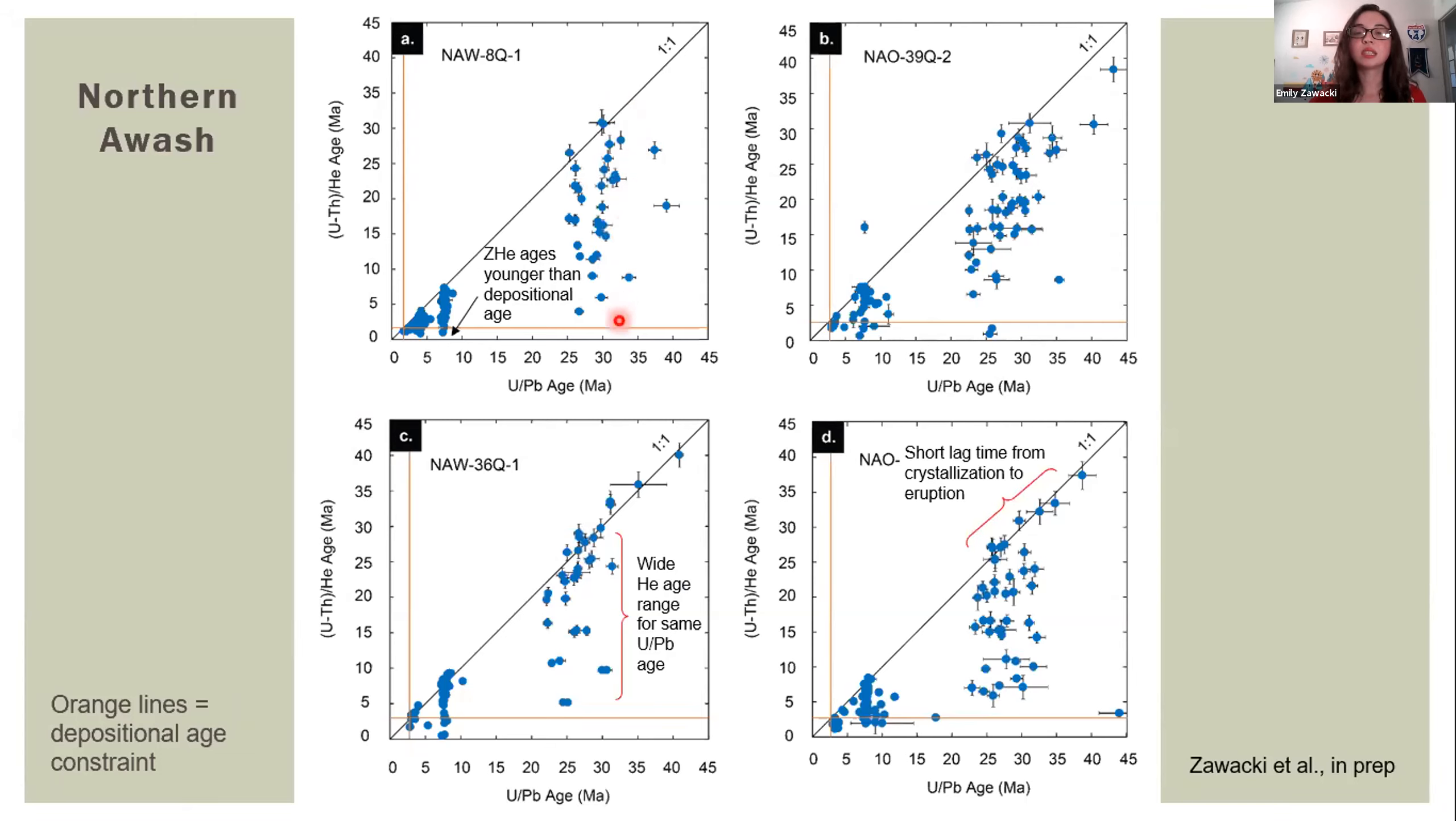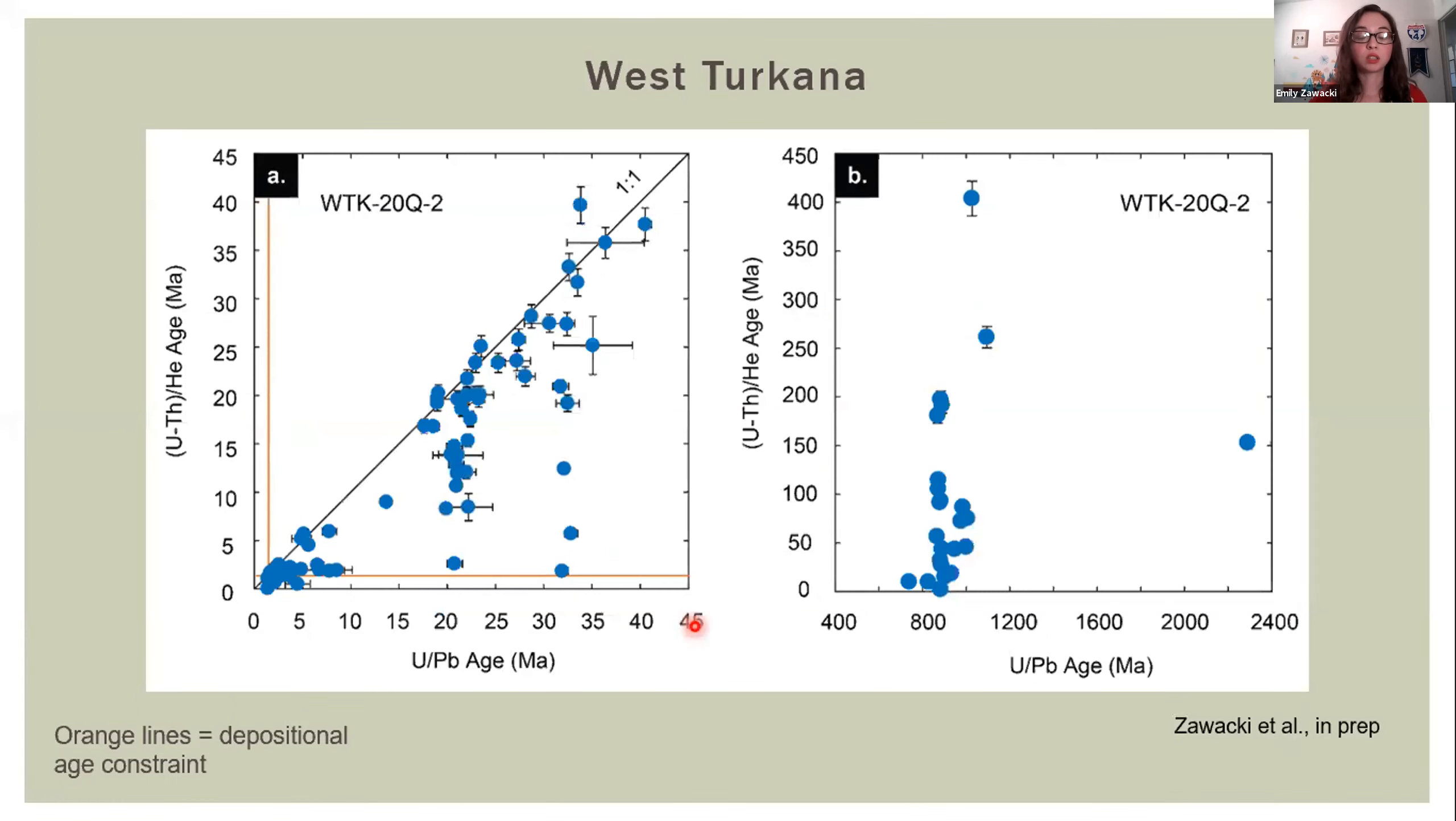Looking at our double-dating plots of helium age versus uranium-led age, we see a very wide range in helium ages for the same given uranium-led age. For all samples, we have helium ages younger than the depositional age. This widespread in helium ages is indicative of partial resetting, likely due to either heating from basalt flows or hydrothermal alteration in this dynamic active rift.